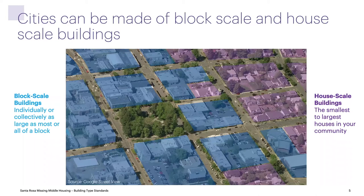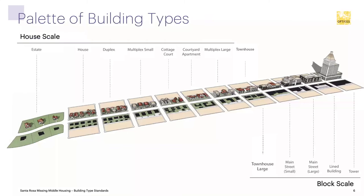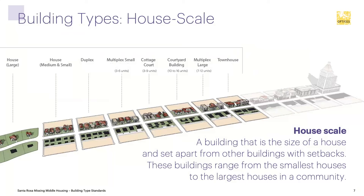Going back to the idea of building types and the two categories we talked about in the building types session of this series — block scale buildings and house scale buildings — we're going to take that forward and talk a little further about each of these types. In the house scale category on the left, it is the category of buildings that are the size of houses, small to large, whether they have one unit, many units, non-residential space, whatever — we're talking about the scale, not the use. These buildings have separation between them with front, side, and rear setbacks, and there are different types within this category.